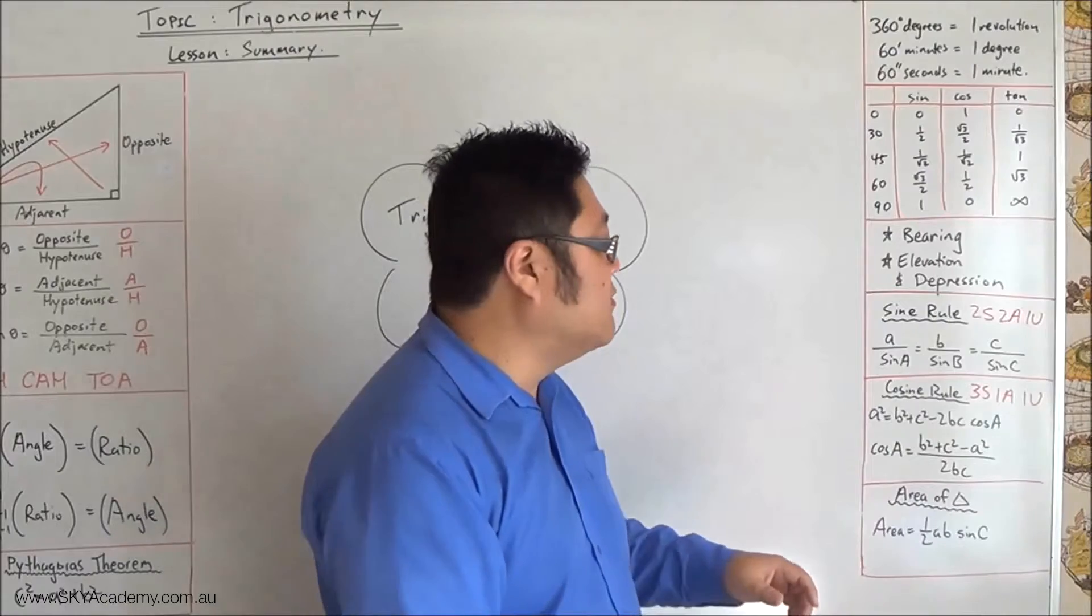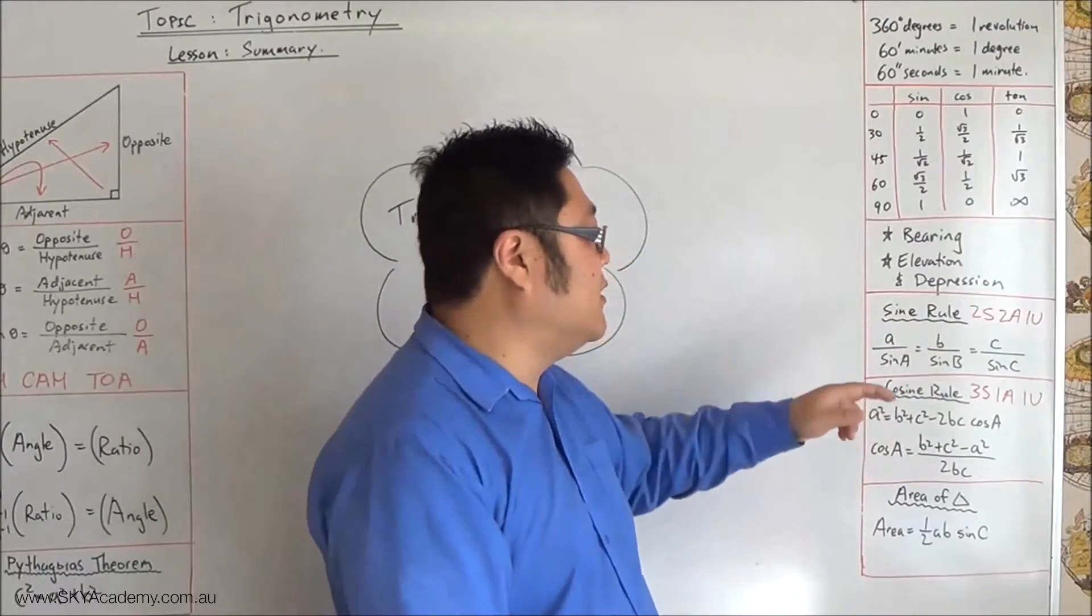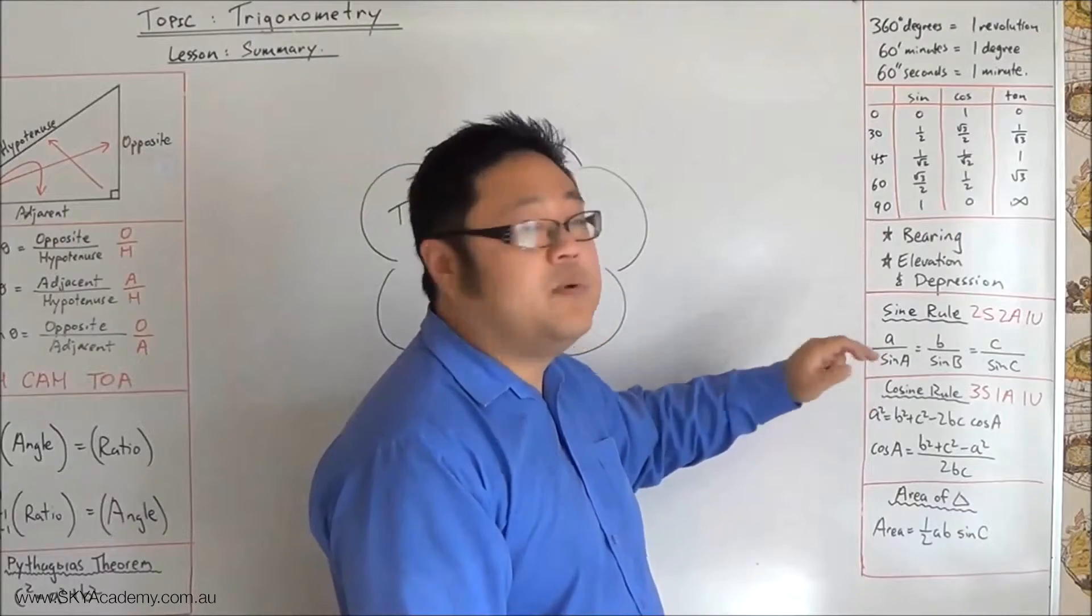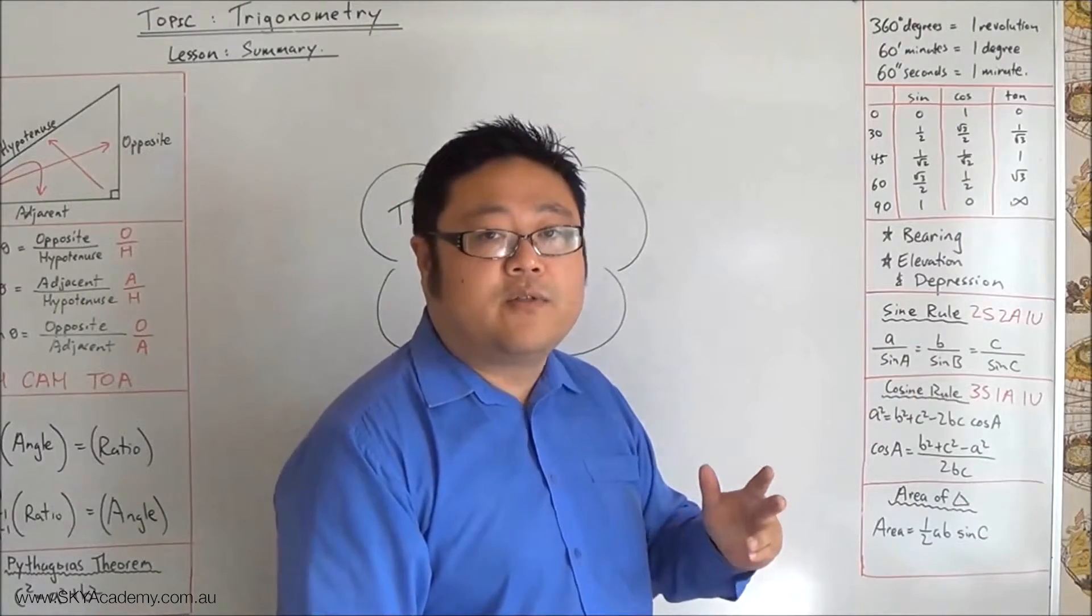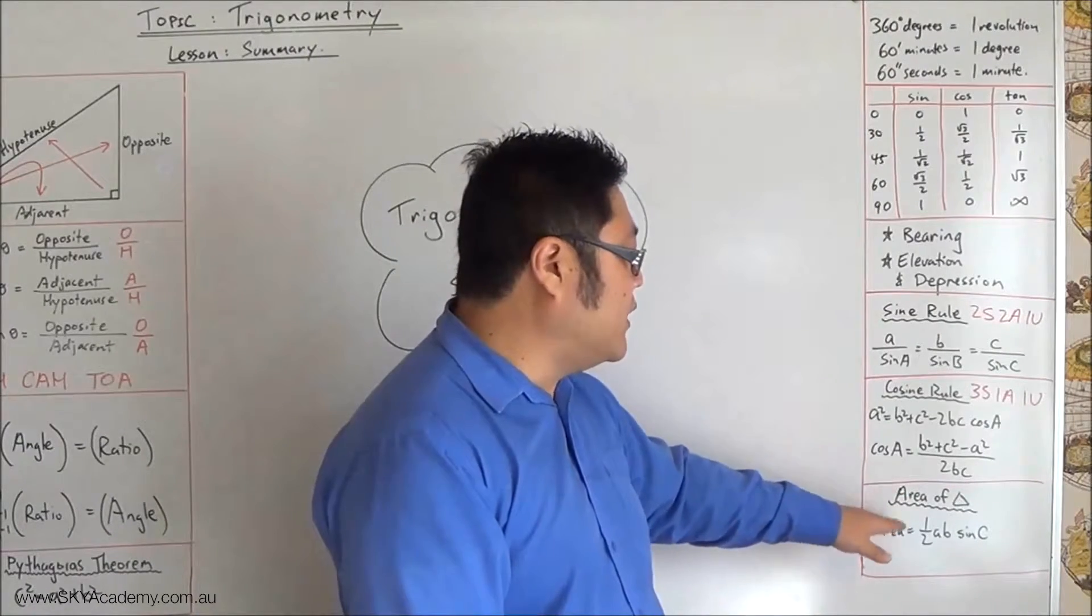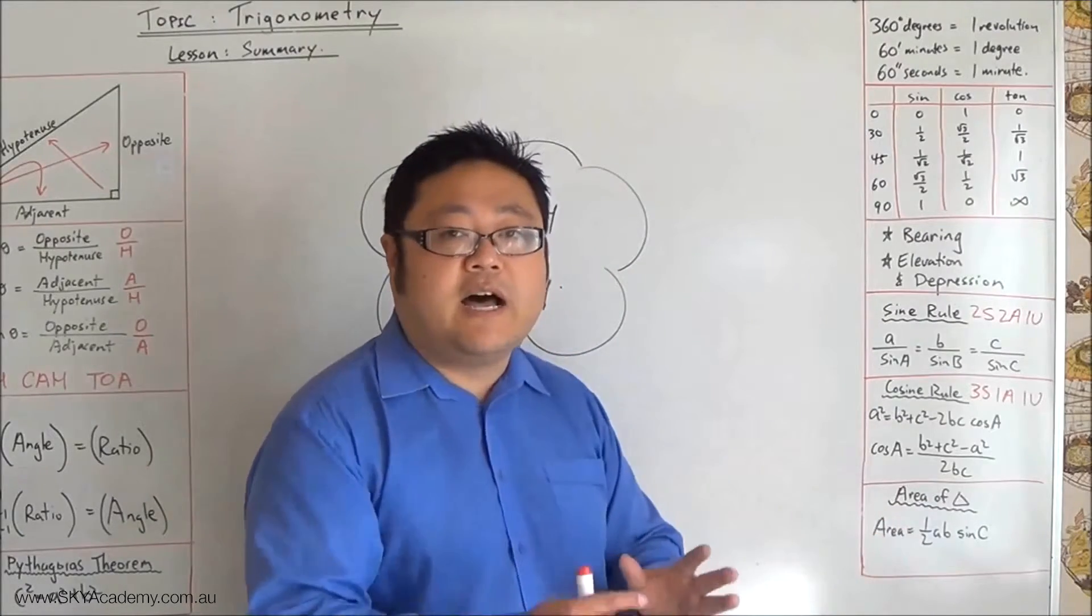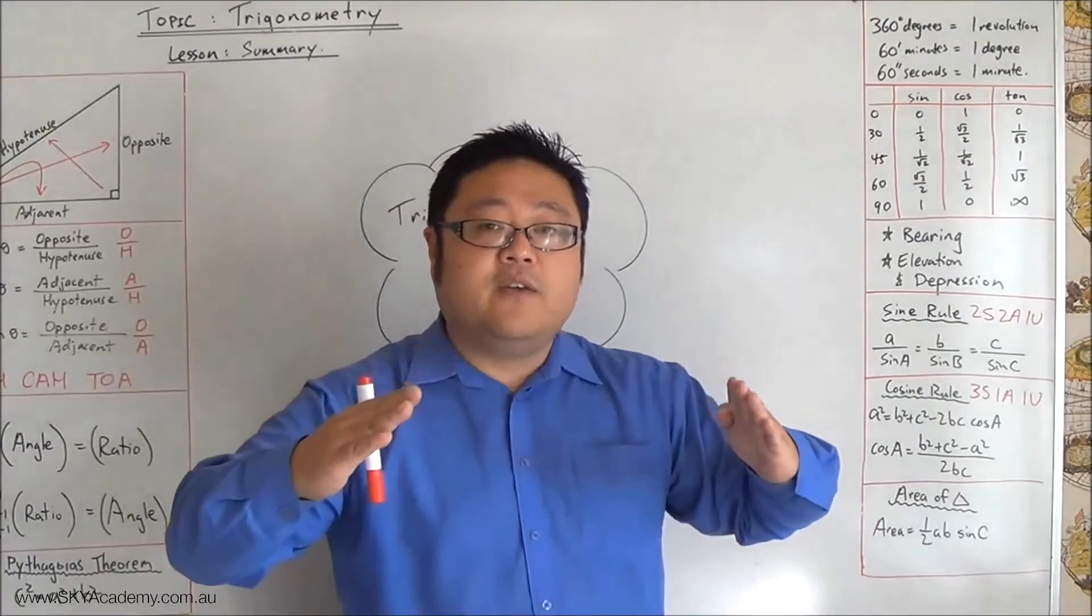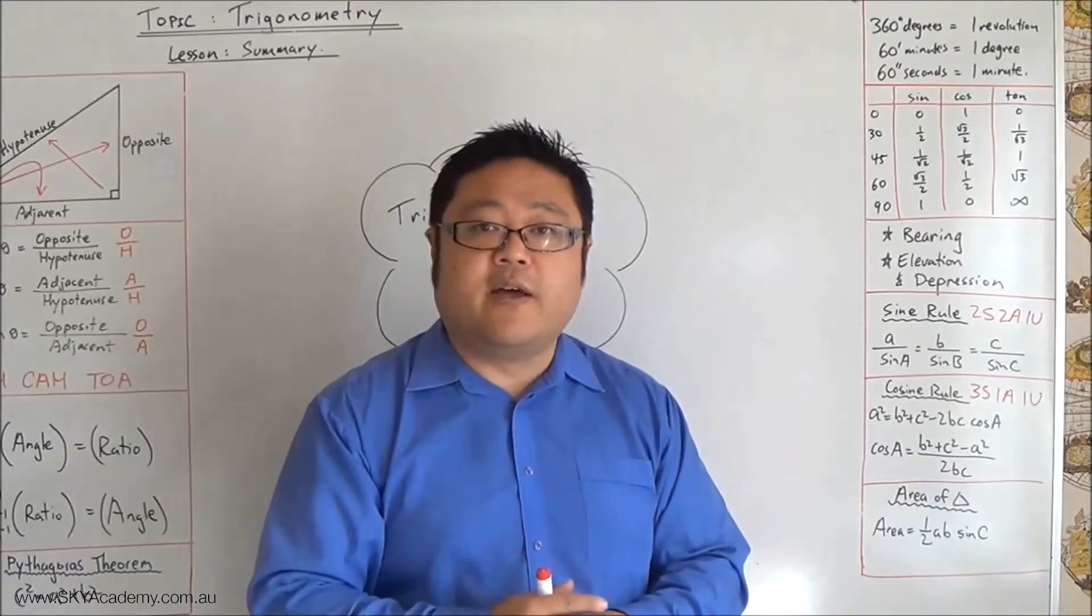And the sine rule is basically the ratio of the side with the sine of the opposite angle is equal in all three triangles, for all three angles. And then we've also worked out that the area of a triangle is also equal to half ab sine c, which basically says that you've got two sides and the included angle, you can work out the area.